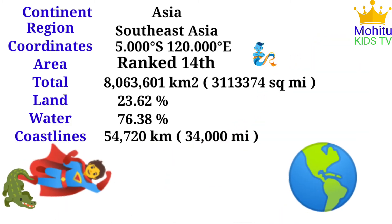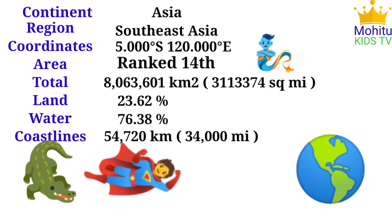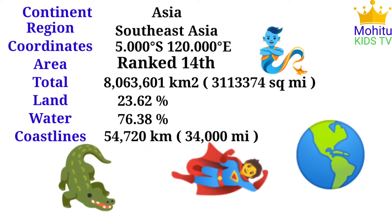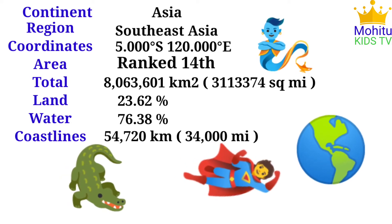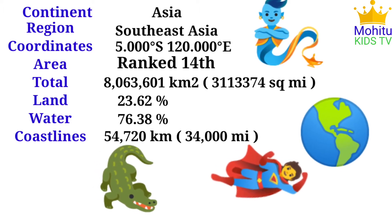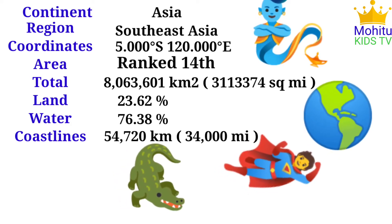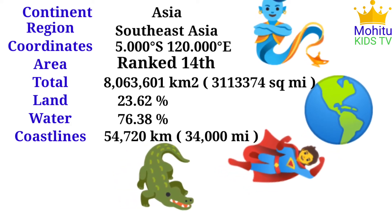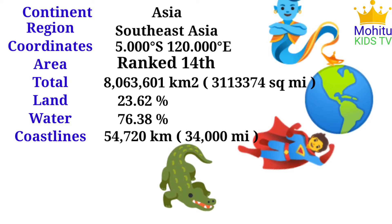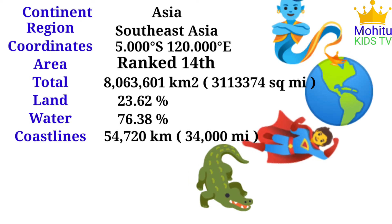Indonesia is located in the continent of Asia, region Southeast Asia. Coordinates: 5 degrees S, 120 degrees E. Area ranked 14th total: 8,063,601 km². Land: 23.62%, water: 76.38%. Coastline: 54,720 km (34,000 miles).